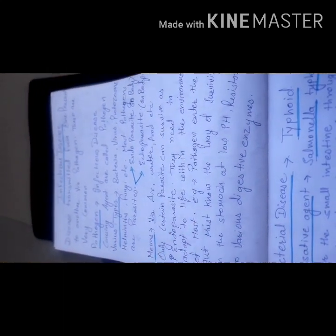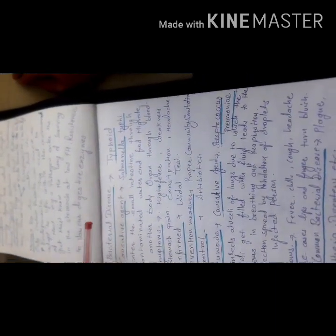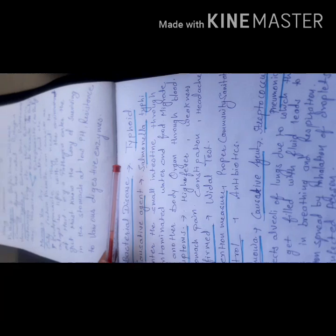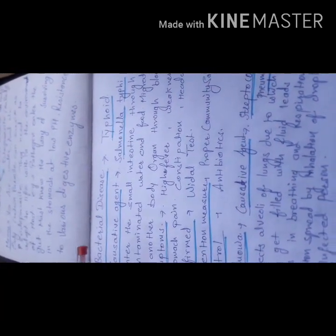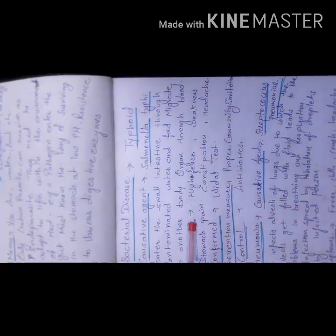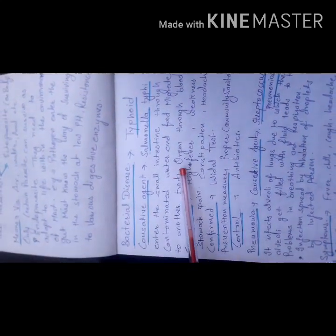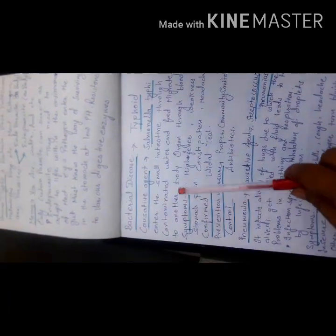We start with our first bacterial disease, that is typhoid. The causative agent for typhoid is Salmonella typhi. It enters the small intestine through contaminated water and food and migrates to other body organs through blood.